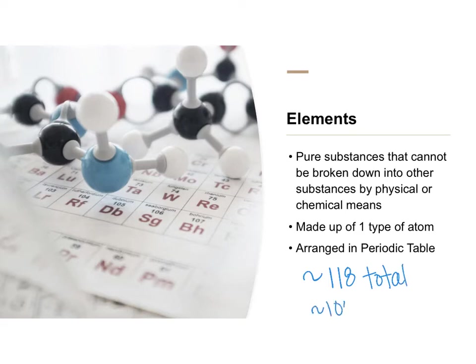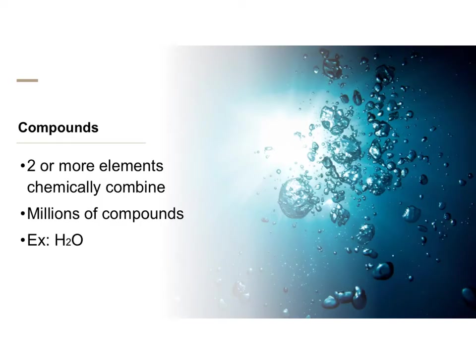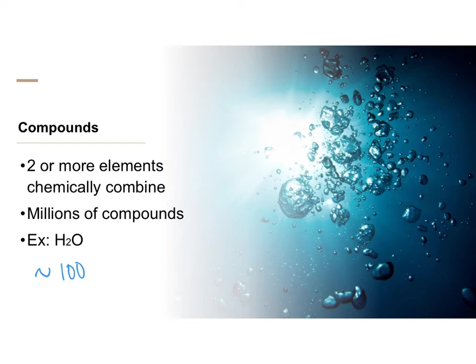When two or more elements chemically combine, they form something called a compound. Those roughly 100 naturally occurring elements can combine in different numbers and quantities, so there are more than millions of different compounds on this planet. We will study a handful of them in biology, and a very common one is H2O, also known as water.